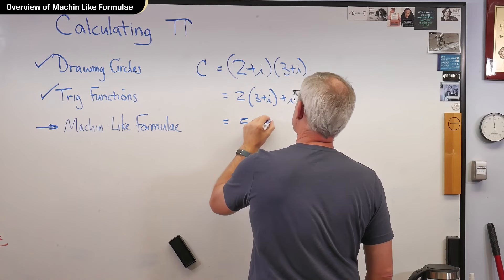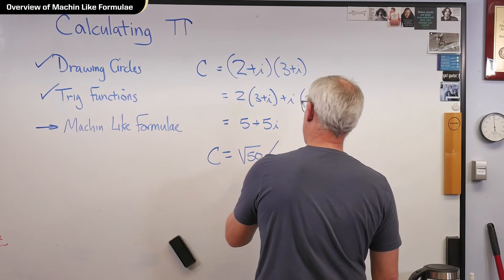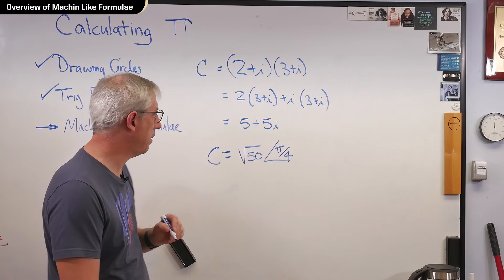Well, that means c in polar form is the square root of 50, and the angle is pi over 4. Wait a minute. What just happened here? Look at that. We don't care about the magnitude. We care about that. Pi over 4.